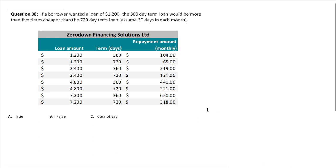Let's review the question. If a borrower wanted a loan of $1,200, the 360-day term loan would be more than five times cheaper than the 720-day term loan. This is not a question — it's a statement. This type of problem is called a verification, true/false, or cannot say type problem. You need to verify whether it's true, false, or whether there's not enough data to confirm or deny. Basically, we need to work out the cost of this loan — the total interest in dollars that you would pay for one versus the other and compare them.